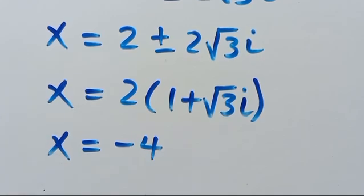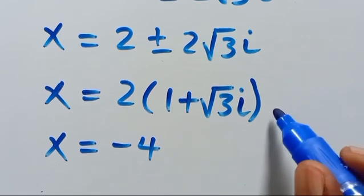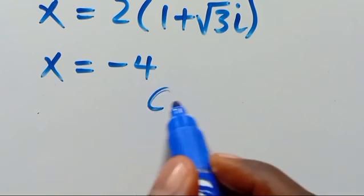So we also have x equals negative 4 as a real solution from Case 1, while the complex solutions are x equals 2(1 plus or minus root 3 i). Now let's go with Case 2.